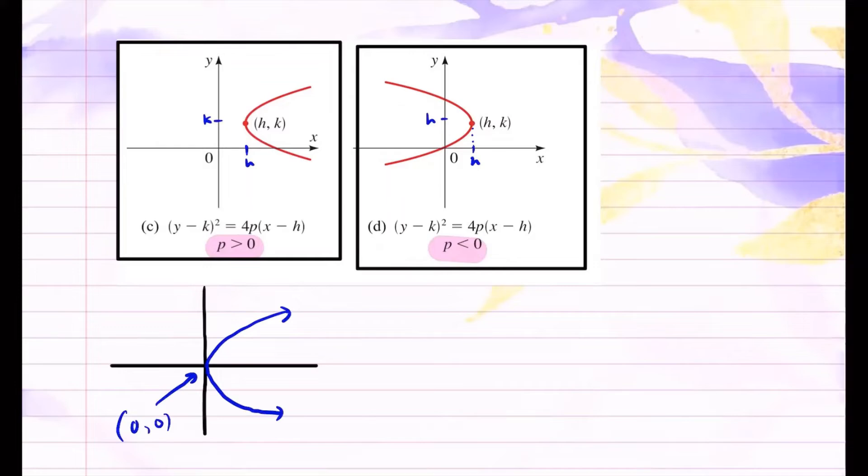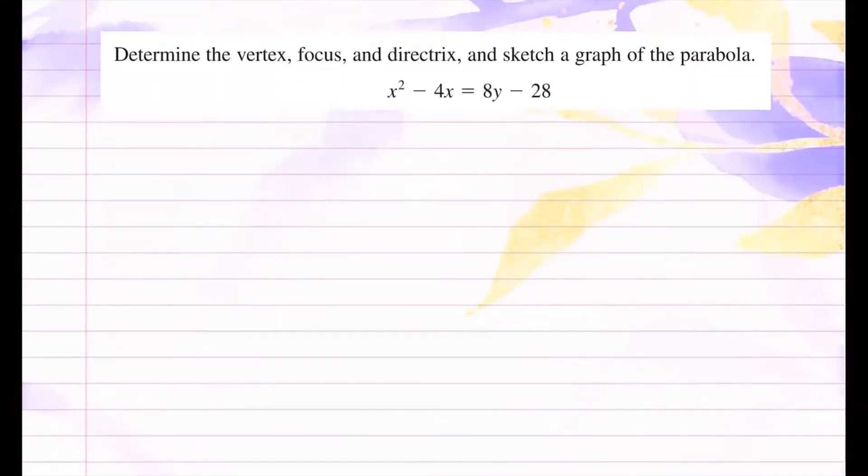Now knowing that, let's take a look at an example. Here's an example. We want to determine the vertex, focus, and directrix and sketch the graph of this parabola. So you see how you have x squared. That means we're looking at the case in standard form. We can say that it looks like (x - h)² = 4p(y - k).